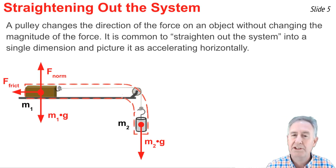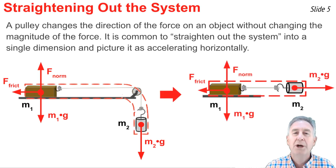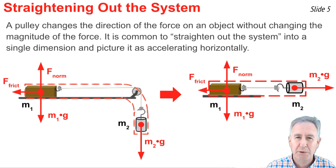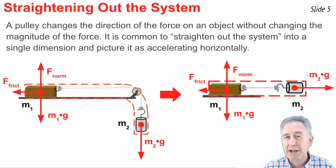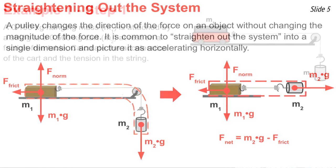One way to picture this is as a linearized system where the force of gravity on the hanging mass acts horizontally, because the pulley has been removed conceptually. Although gravity is not actually horizontal, it's a useful way of picturing the system. We then say F_net equals the forward force minus the backward force — in this situation, M2G minus the friction force on the table mass.